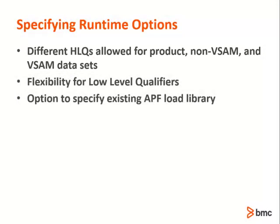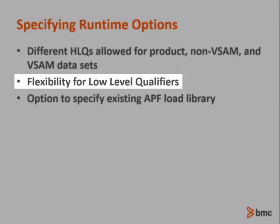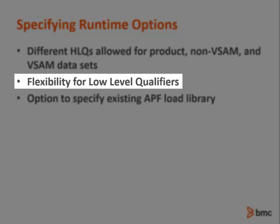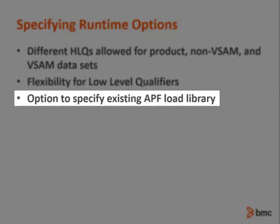On the next slide, we will see three different options for specifying low-level qualifiers for the runtime datasets. This provides flexibility in how the datasets will be concatenated in CLIST and PROCs and in directing certain product content to certain low-level qualifiers. If you have an existing APF load library, you may specify the name and all the load library content, including any members that are configured by the installation system, will be copied to that library.